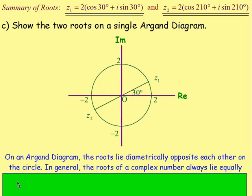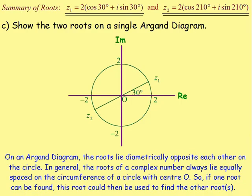In general, the roots of any complex number will always lie equally spaced on the circumference of a circle with centre O. If you know one root, you can easily find the others. For square roots, they're diametrically opposite. For three or four roots, they'll be evenly spaced — once you work out one, you can work out the rest.